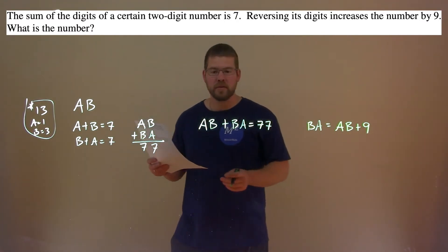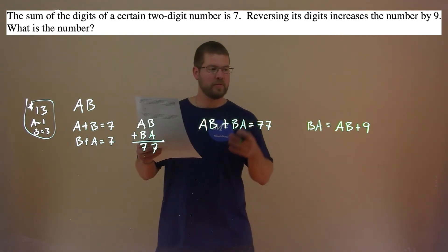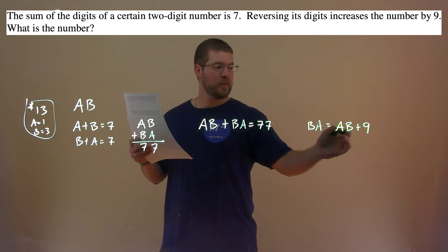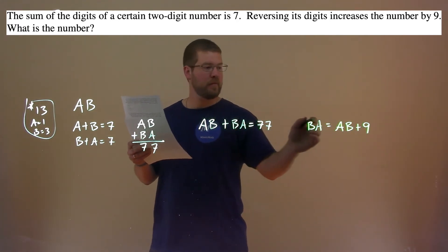Well, now we have two equations. So let's go solve for AB. We take BA, we know it to be AB plus 9. I'm going to plug it into this BA right here.